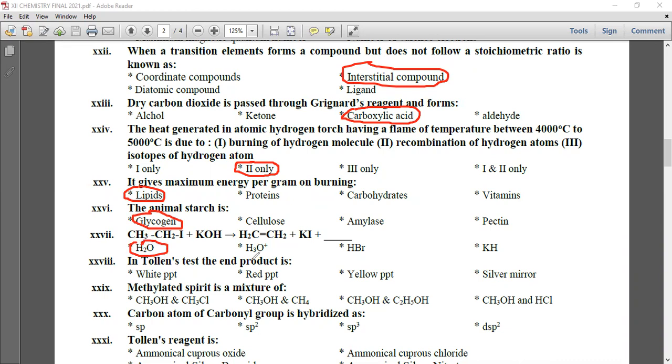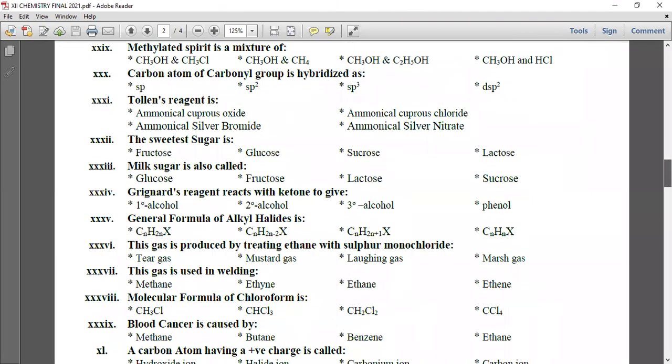In Tollens reagent, the end product is silver mirror. In the Tollens test, when aldehyde is tested, it forms a silver mirror. Methylated spirit is a mixture of methanol and ethanol. The carbon atom of carbonyl group is sp² hybridized. Tollens reagent is ammoniacal silver nitrate.